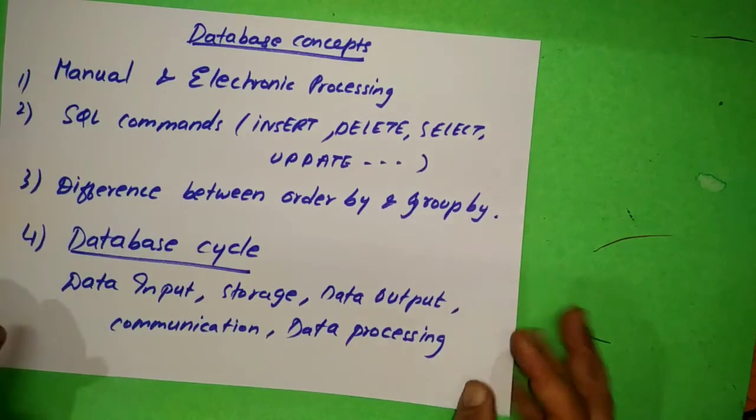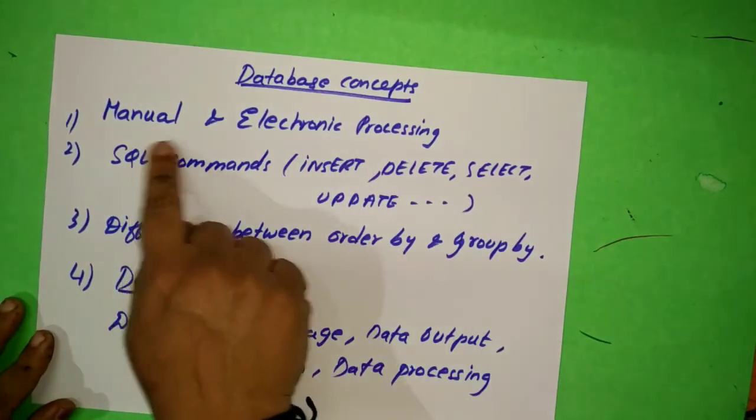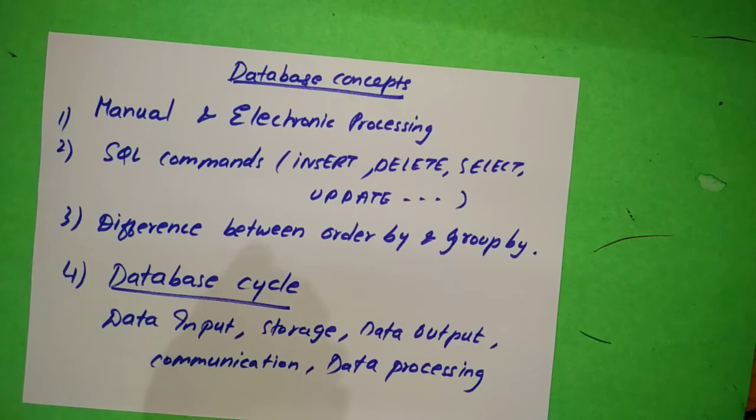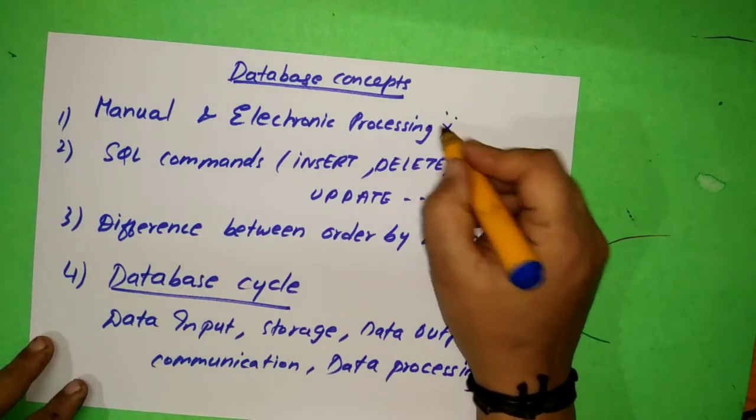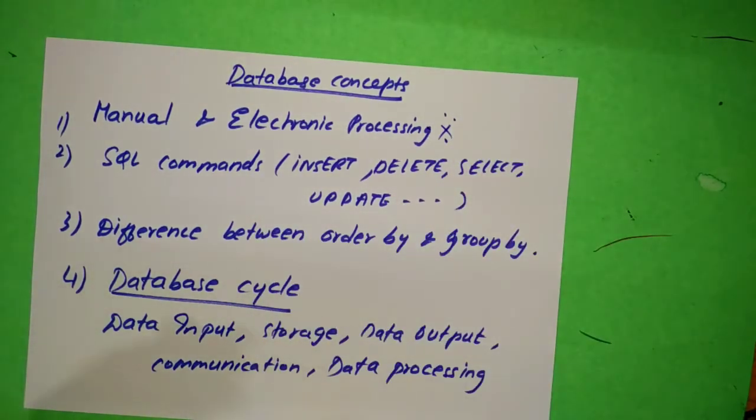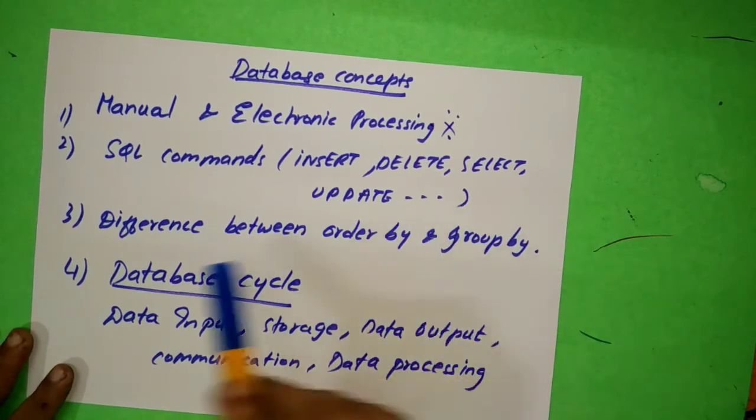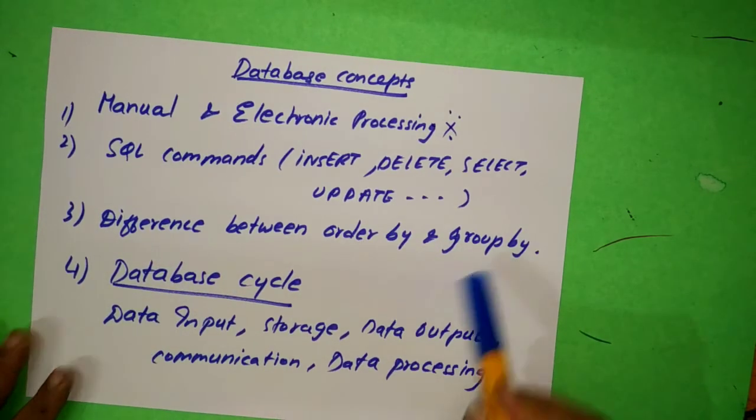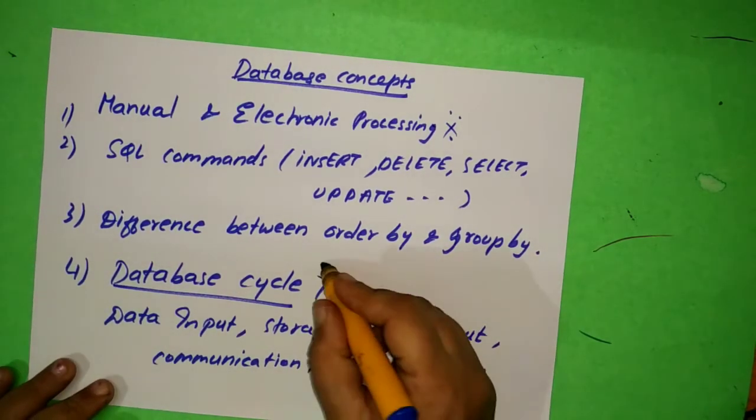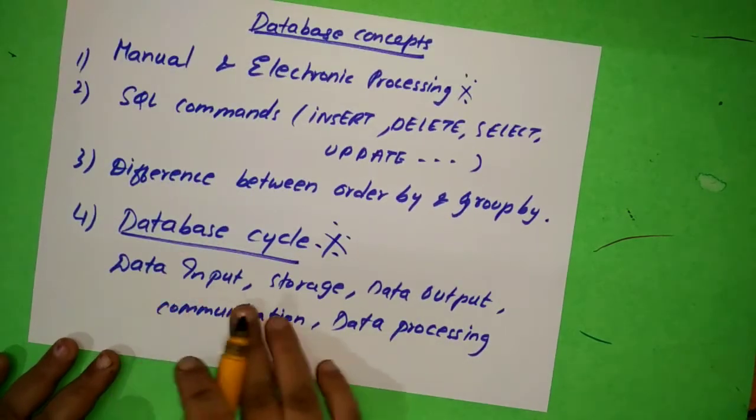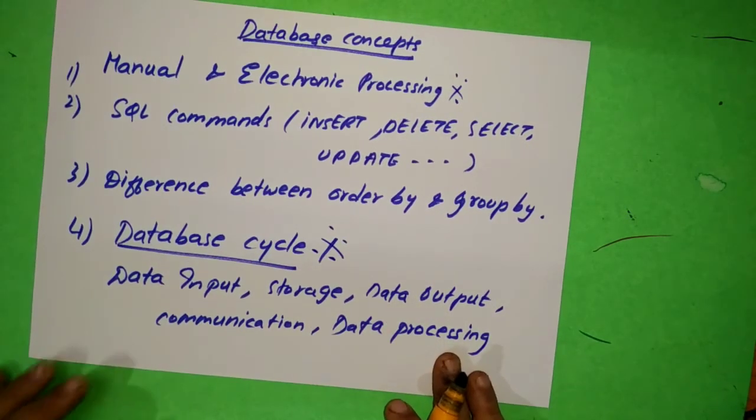This is clear. And database concepts also, this is a very common question: manual and electronic processing asked for five marks. Actually this is, then they ask you for the SQL commands: insert, delete, select, update. And difference between order by and group by. And database cycle: this is also very easy - data input, storage, data output, communication, and data processing.